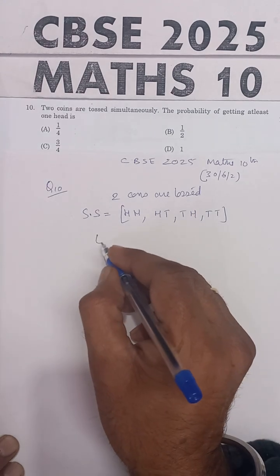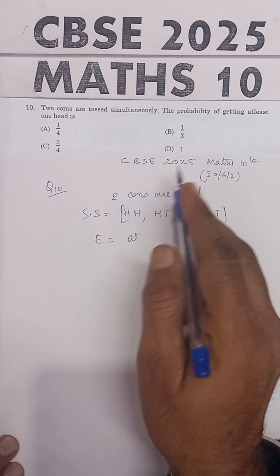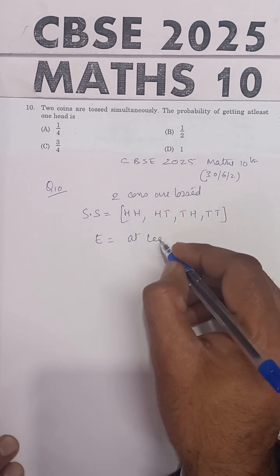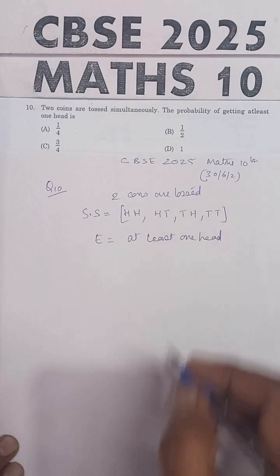Now E is an event in which you are getting at least one head. At least one head means this: